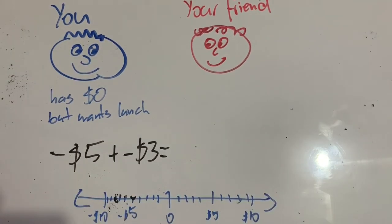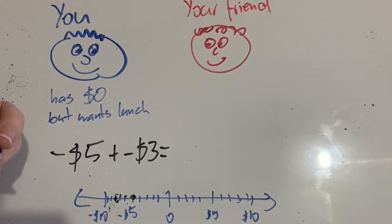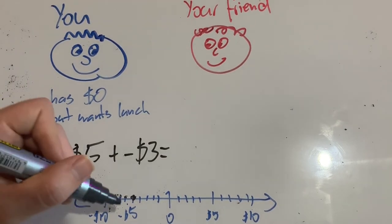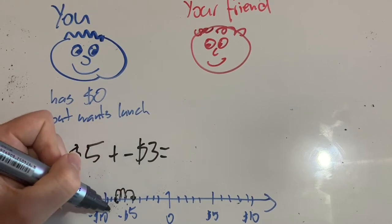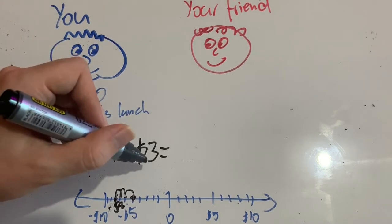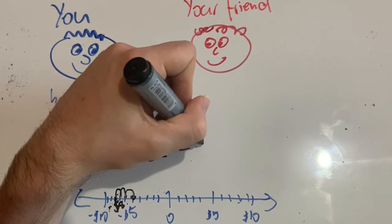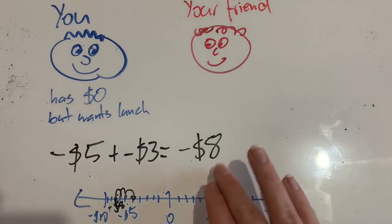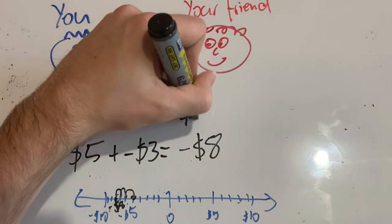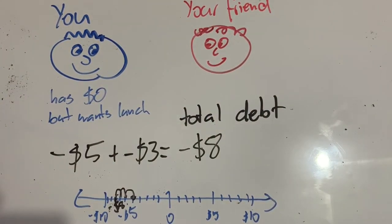If we look at this on a number line, we've got zero in the middle and negatives to the left and positives to the right. We start at negative 5 because that's our starting debt when we buy the burger. Then we want to add $3 of debt when we buy a drink, so we need to jump back 3, we're actually subtracting 3. So now we have negative $8. Negative 5 plus negative 3 is actually the same as negative 5 minus 3, which is negative $8. That's how much debt you have now, how much you owe your friend and how much you need to pay him back later.